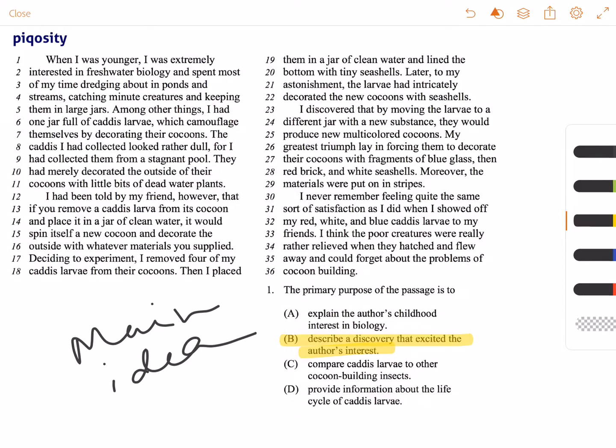The other answer choices don't work. Look at answer choice A: Explain the author's childhood interest in biology. At the very beginning of the passage, he does say 'when I was younger I was extremely interested in freshwater biology,' but nowhere else is his interest explained, so A doesn't work.